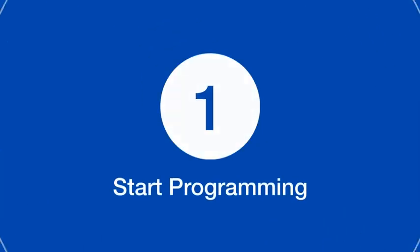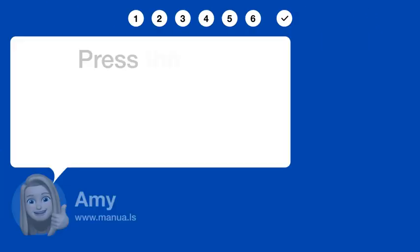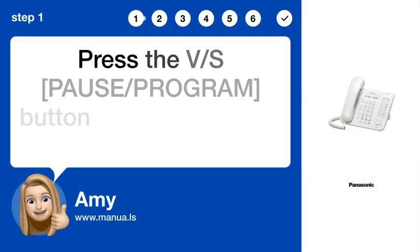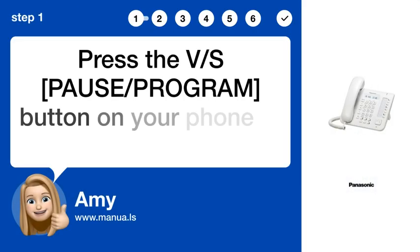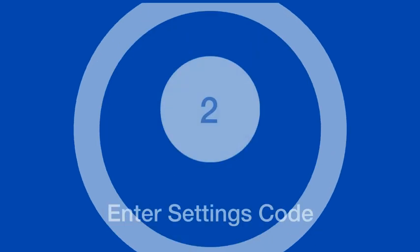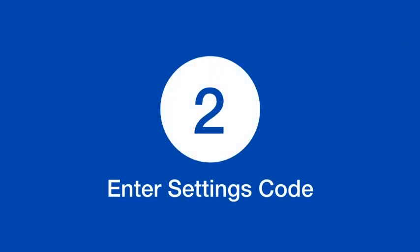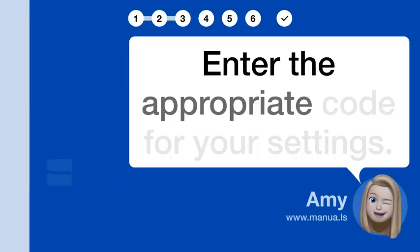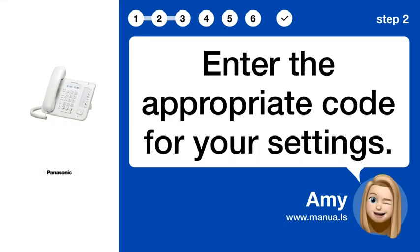Step 1: Start programming. Press the V/S-PAUSE/PROGRAM button on your phone to start programming. Step 2: Enter settings code. Enter the appropriate code for your settings.